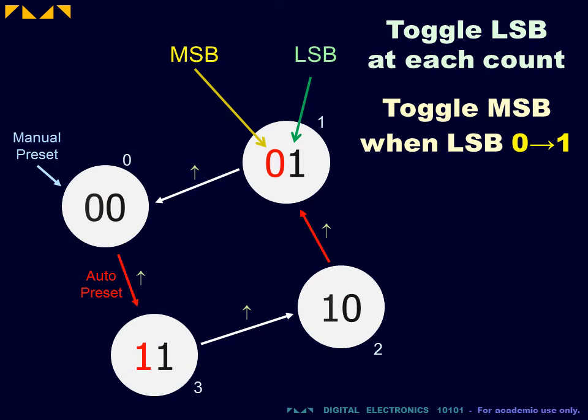Step 2: As opposed to counting up, when counting down, the most significant bit will toggle every time the least significant bit transits from 0 to 1. Once more, this will take into account the auto preset.